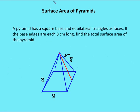Let's take into consideration another problem — see if you can work it out on your own. A pyramid has a square base and equilateral triangles as faces. If the base edges are 8 centimeters long and the lateral edges are 8 centimeters long, find the total surface area of the pyramid. I'm going to let you think on this one for a minute, then we'll go through the answers.